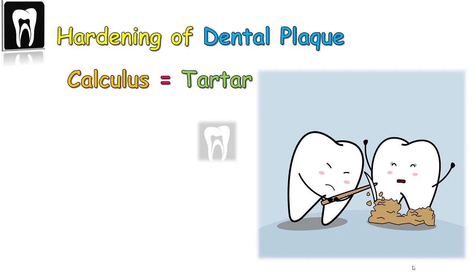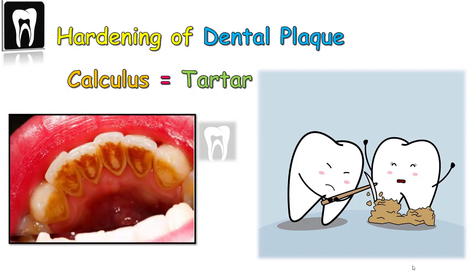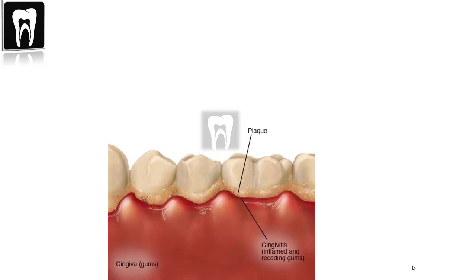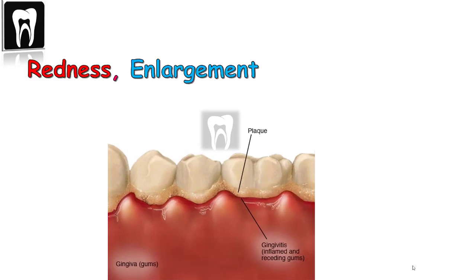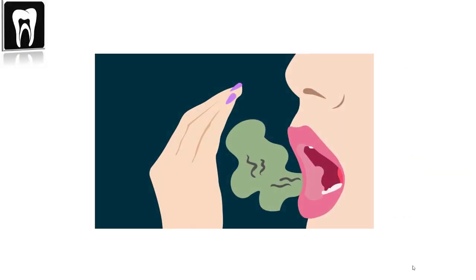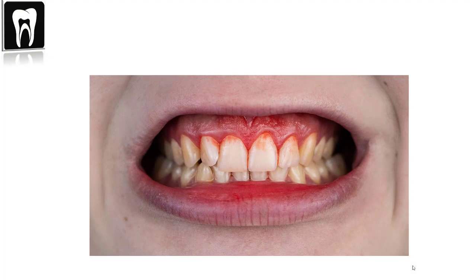Tartar is hard to remove and is a great home for more bacteria to develop — all of this can start gum inflammation. So what do we see in gingivitis? We see redness and enlargement of the gums. We can have bad breath and bleeding, especially after brushing and flossing. That's why some patients refuse to floss.